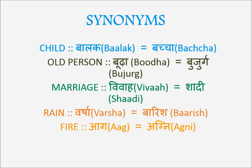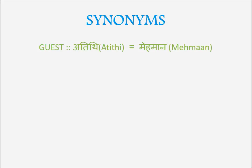Let's revise the slide: child is 'balak,' 'bachcha,' or 'shishu' — 'shishu' is another word for child. Old person is 'budha' or 'bujurg.' Marriage is 'vivah' or 'shaadi.' Rain is 'varsha' or 'baarish.' And fire is 'agni' or 'aag.' A guest is called 'atithi' or 'mehman.'